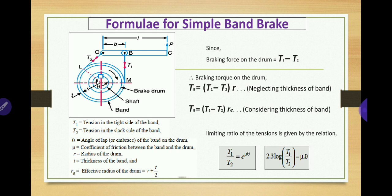For solving problems you must know the formula for breaking torque for a single band brake: breaking torque equals breaking force into radius, and breaking force is T1 minus T2, where T1 is the tension in the tight side and T2 is the tension in the slack side of the band. If the thickness of the band is given, use the second formula: TB = (T1 − T2) × re, where re = r + t/2, with t being the thickness of the band.